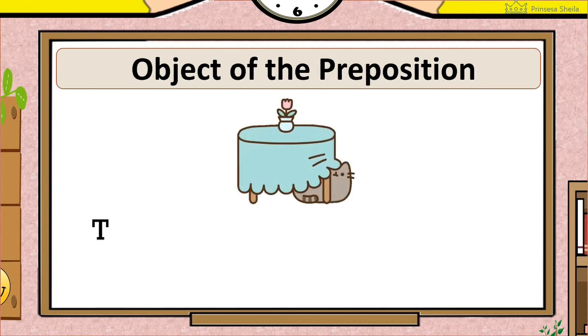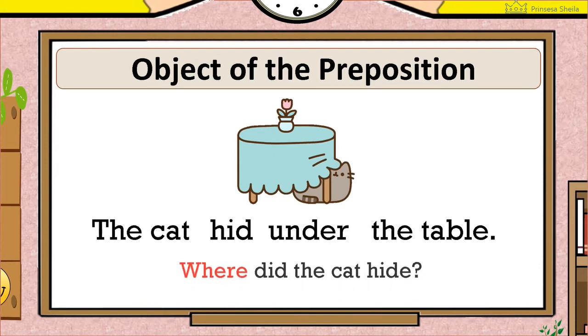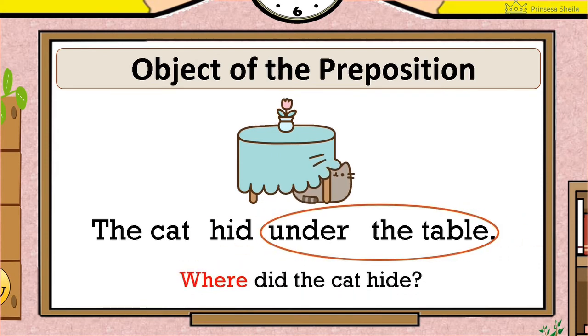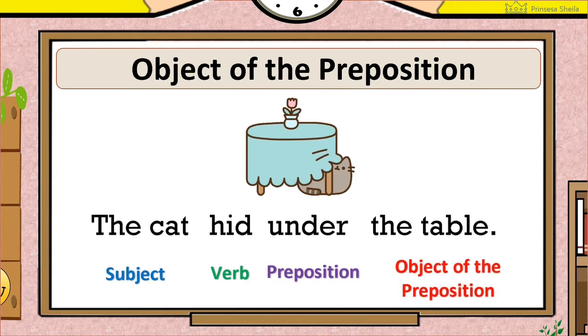Here is an example. The cat hid under the table. Where did the cat hide? Under the table. As you can notice, the table comes with the preposition under. So it is the object of the preposition.